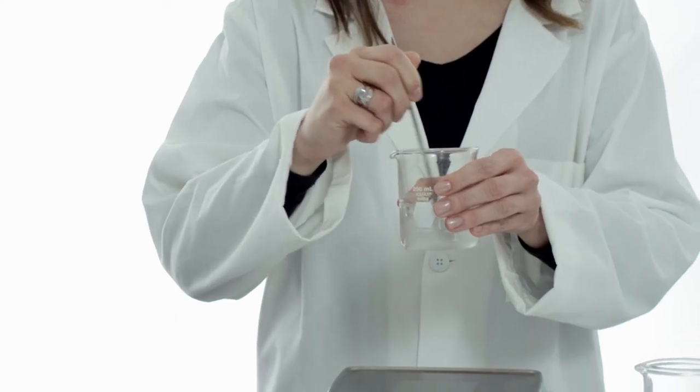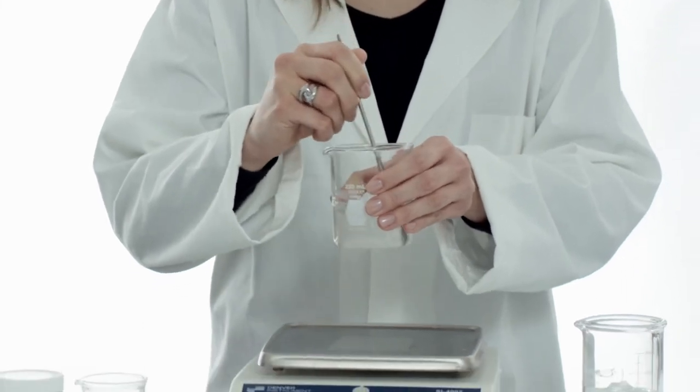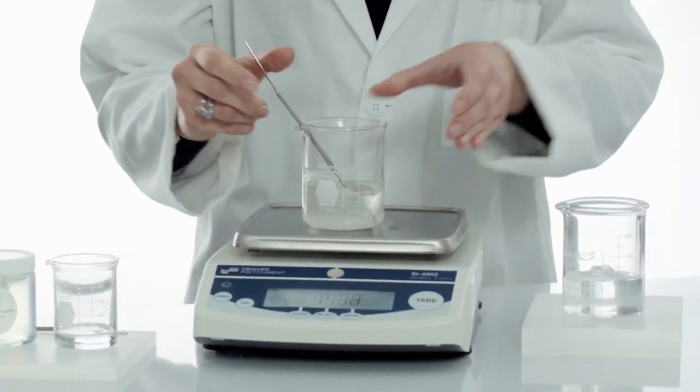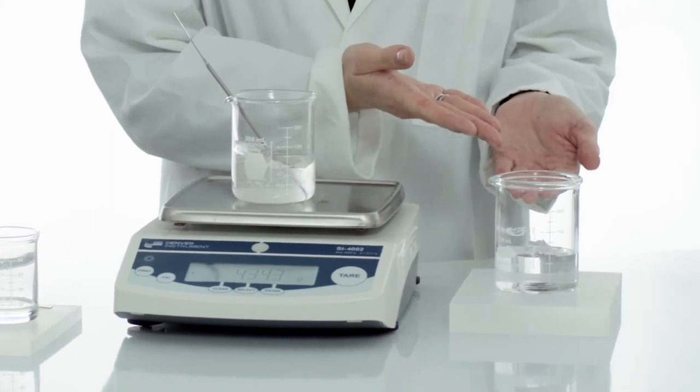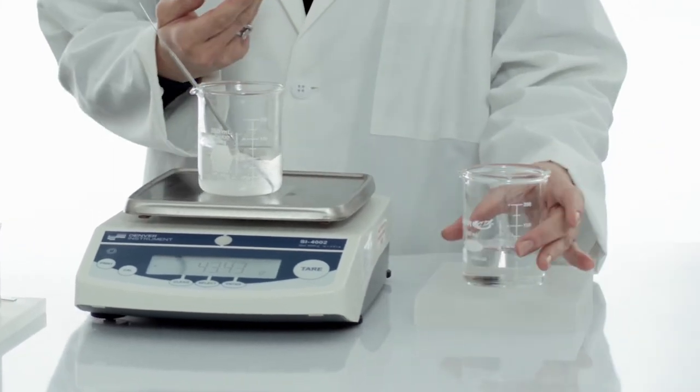While mixing, the formulation will become clearer and clearer until it becomes transparent. For perfect transparency, we can vacuum or centrifuge the formulation to remove air bubbles like we have done with this sample. Finally, the result is a crystal clear serum.